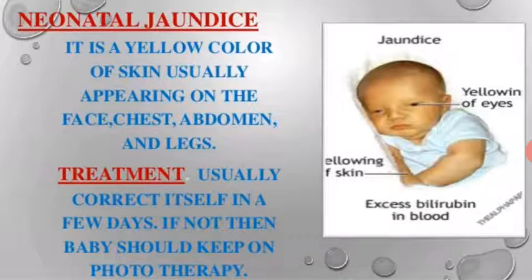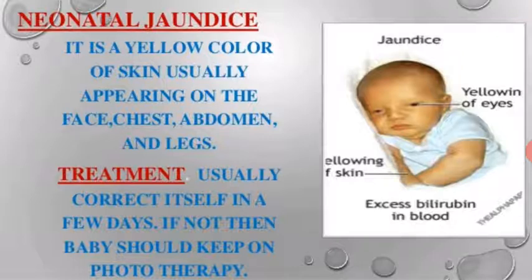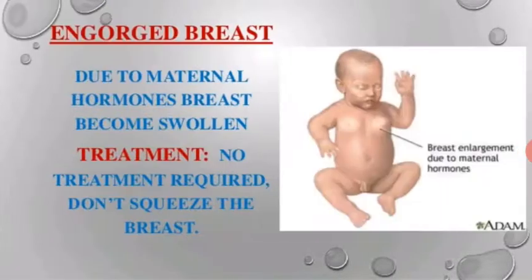Neonatal jaundice: the skin and eyes appear yellow, usually on the face, chest, abdomen, and legs, due to excessive bilirubin. It usually corrects itself, but if it does not resolve in a few days, the baby may require phototherapy.